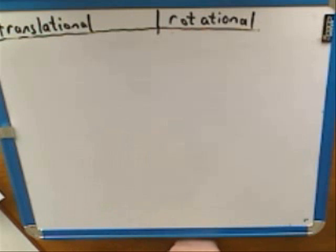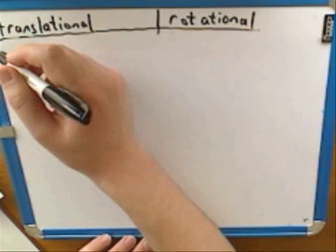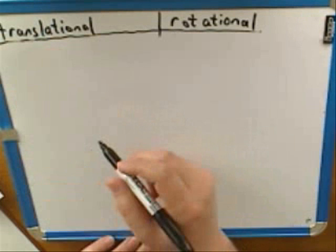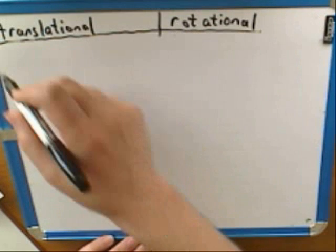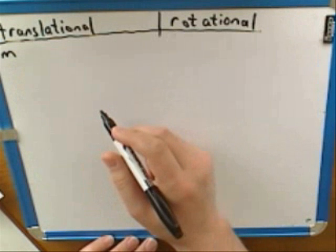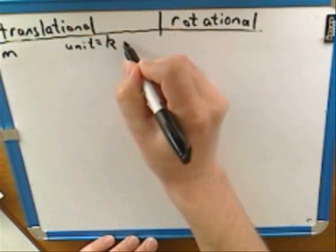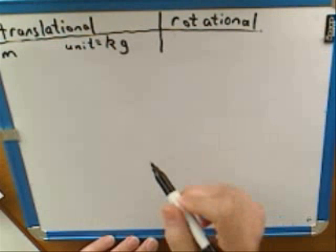Let's keep thinking about the analogies between translational and rotational movement. Let's think about the idea of mass. What's the symbol for mass? Lowercase m. And what is the unit for mass, the standard unit for mass? A kilogram. That's right, not the gram, but the kilogram.